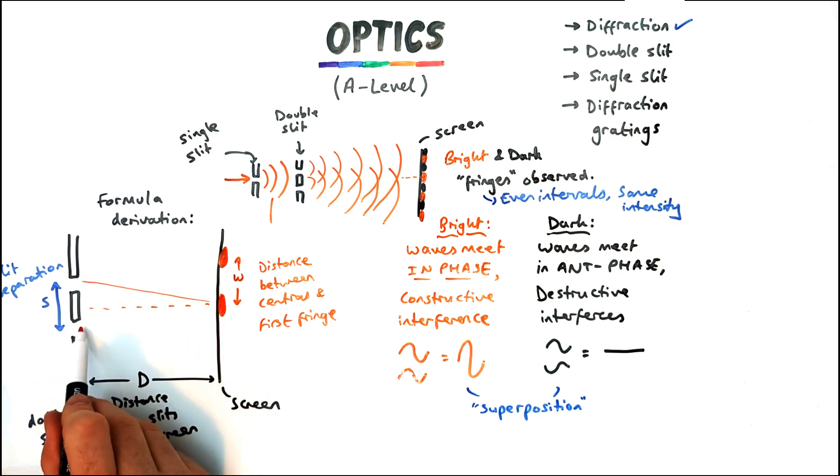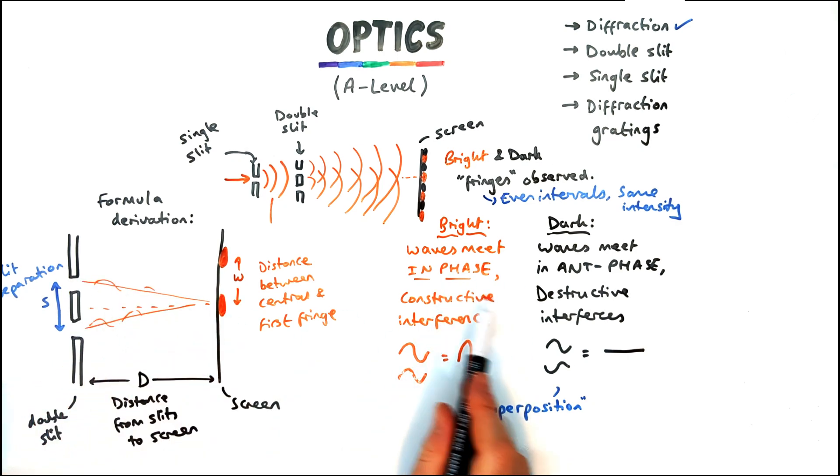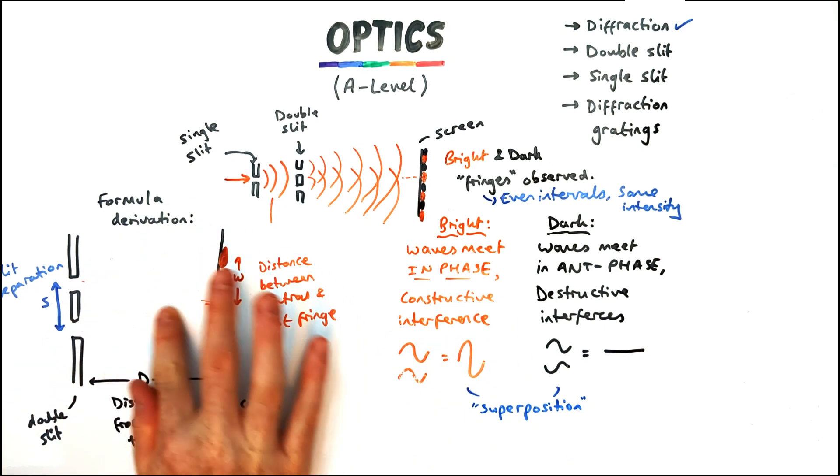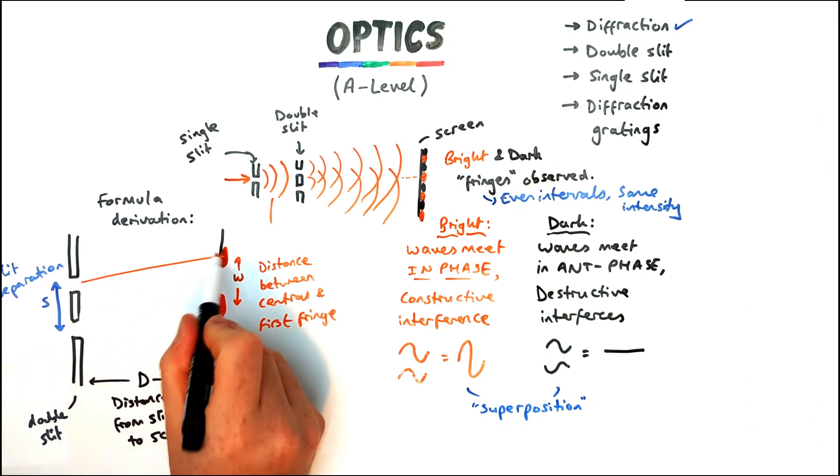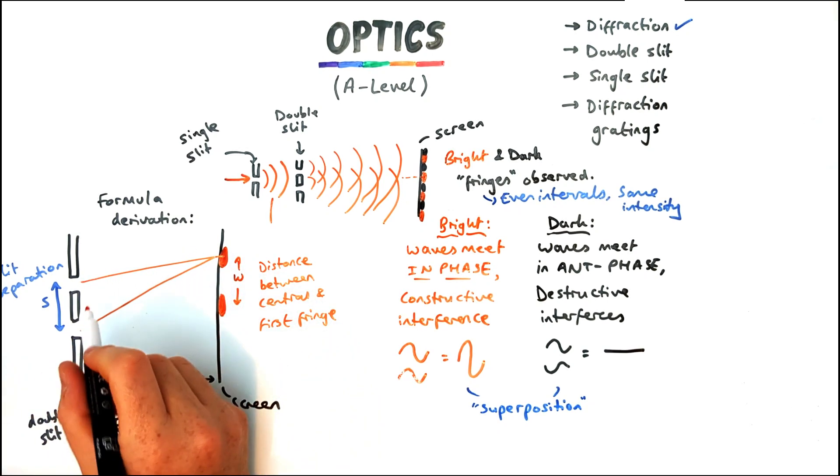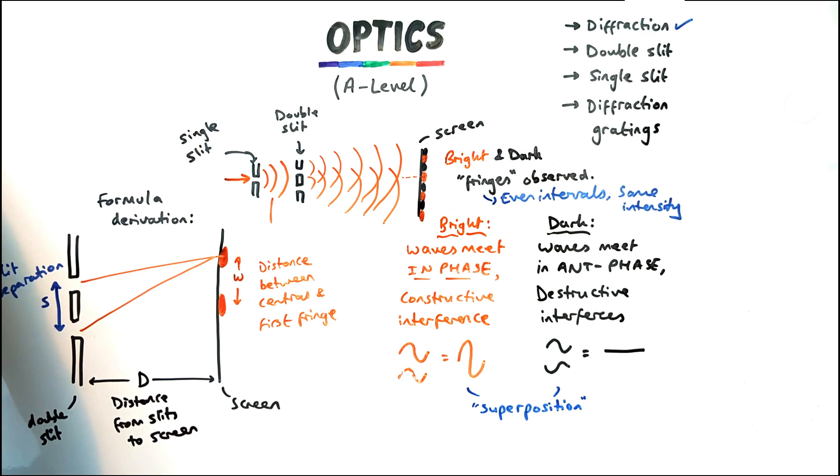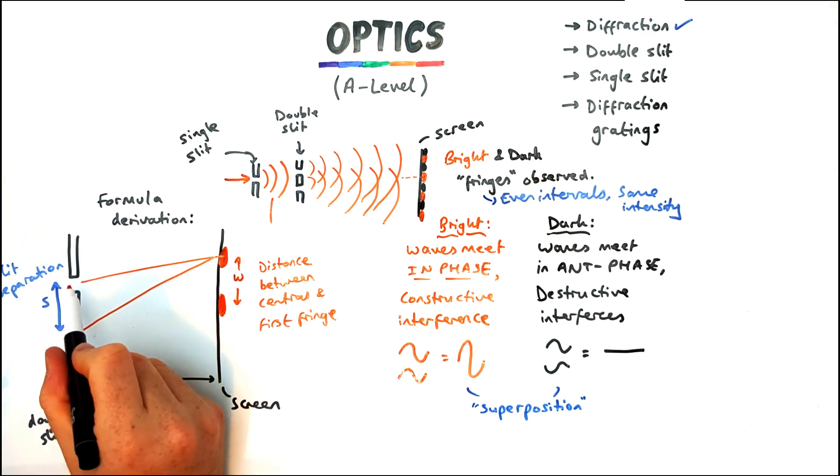Okay now we're going to derive this equation using the idea of similar triangles. So first triangle we're going to draw is this one. So the two rays from each slit will meet up at that first fringe. We're just looking at that one for now and that will form a triangle which we're going to sketch out properly in a second.